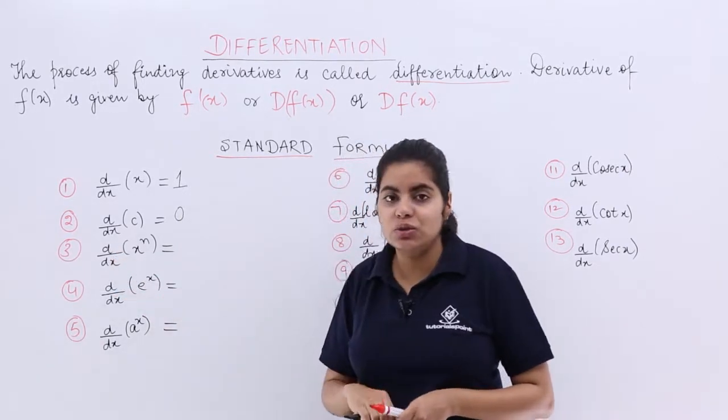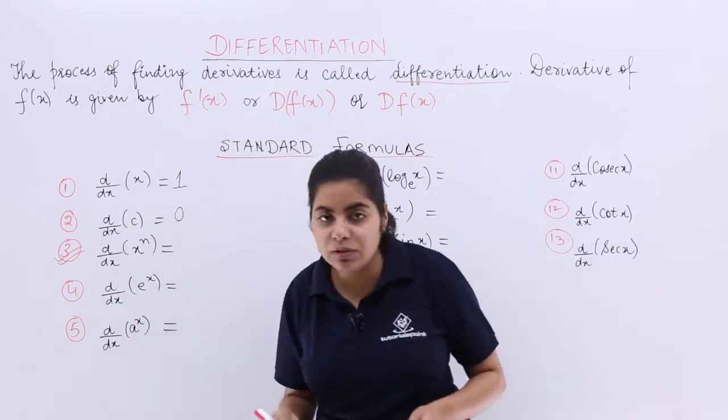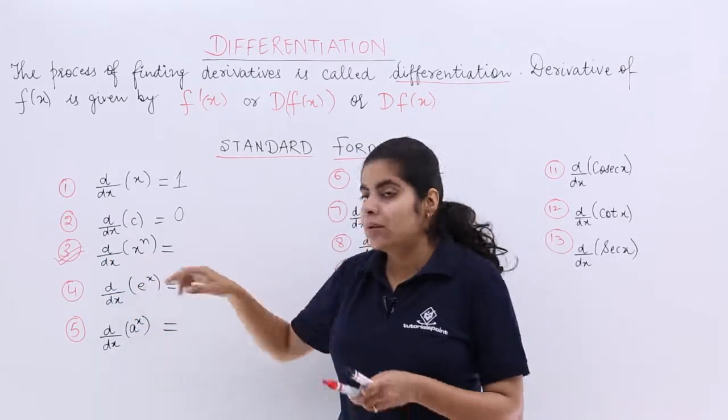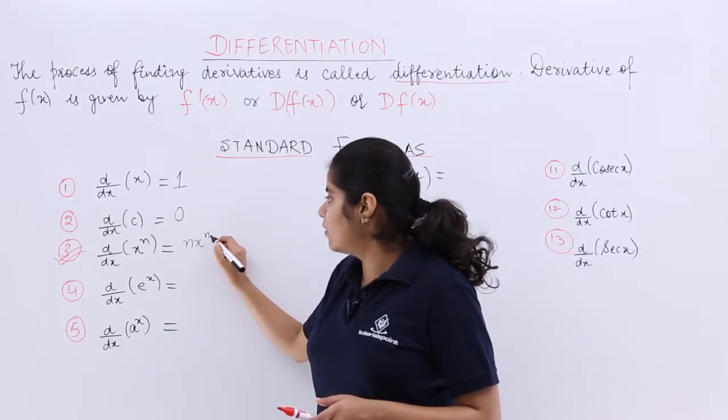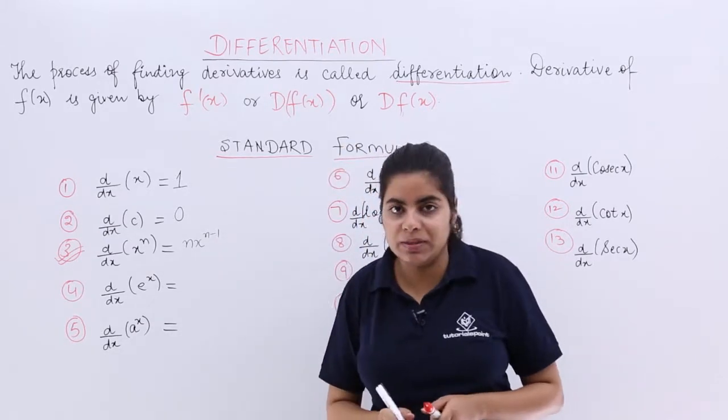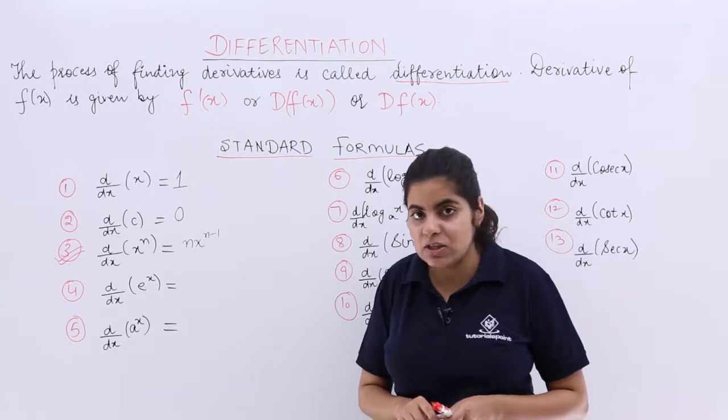Now d by dx of x raised to the power n. This has been used most of the times, till date and still will be used. You have to remember this. The d by dx of x raised to the power n is nx raised to the power n-1. This is the answer. This formula is of wide importance. One must remember it.